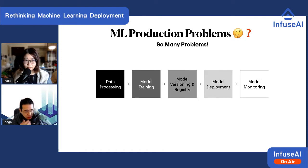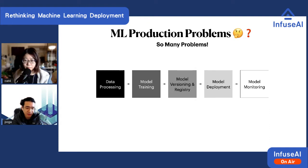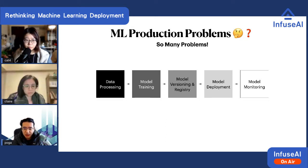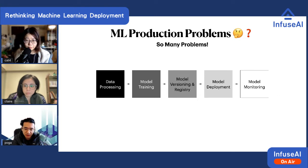First, you need to do the data processing, and then after maybe spending multiple weeks to figure out and clean up your data, you start training your model. After that, you need some kind of model registry to version and keep track of what models you have and which one to deploy to production, followed by the serving part where you deploy the model to an API server.